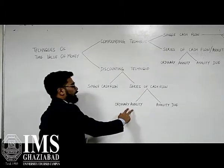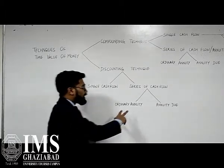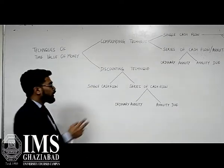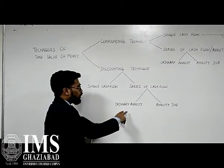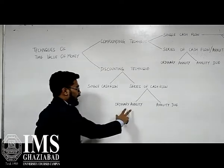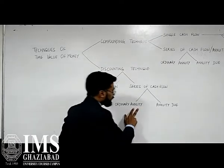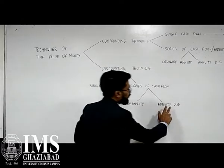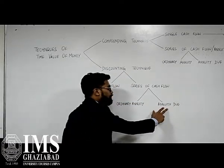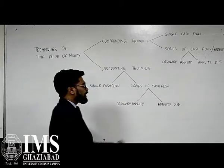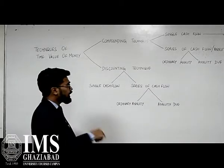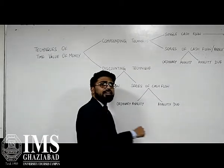In ordinary annuity, if we are making or receiving payment at the end of the period — for example, for the next 10 years, making payments on the 31st of December every year — we calculate the present value of that cash flow. In annuity due, we are making or receiving payments in the beginning of the period, so if we are receiving payments for the next 10 years, we calculate what is the present value for that cash flow.